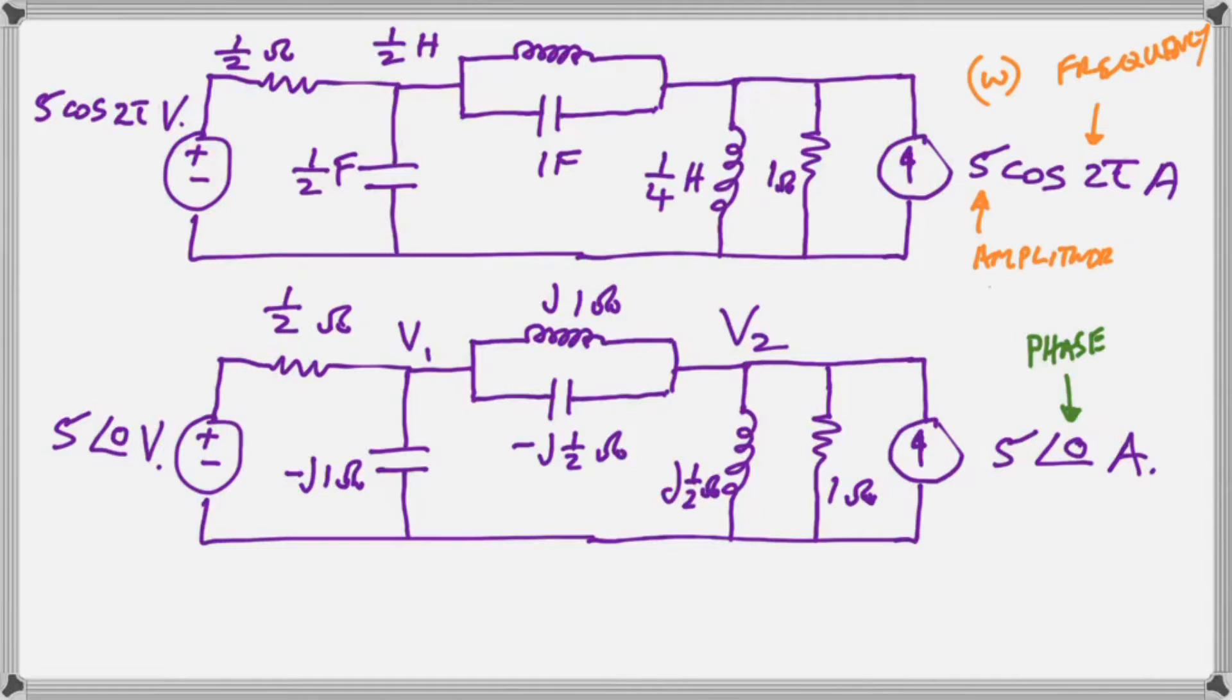Well, we know the amplitude and frequency of our source. As you can see, I've labeled them there in the orange. The frequency is merely 2. Omega is 2. So, we have no phase angle.